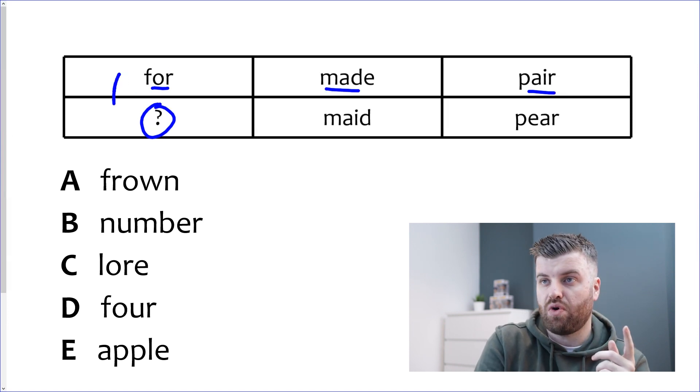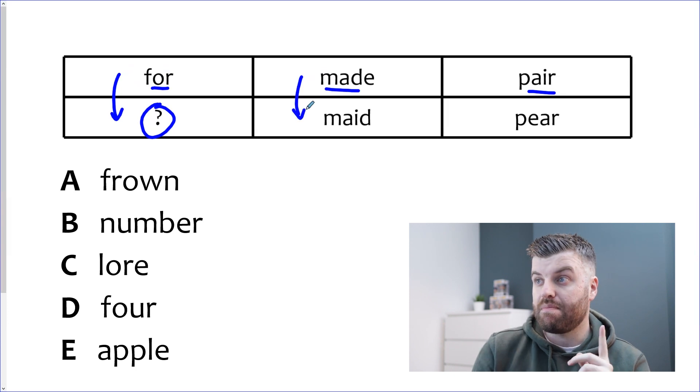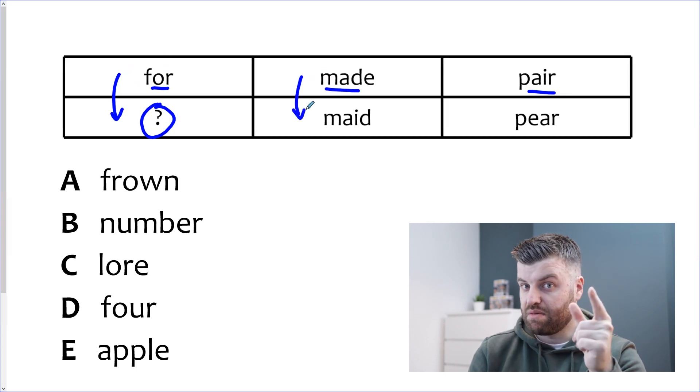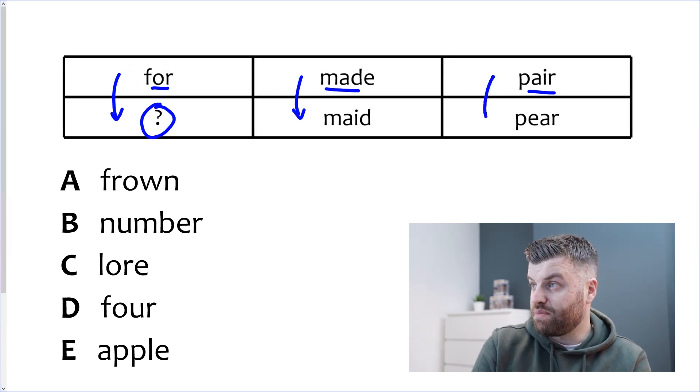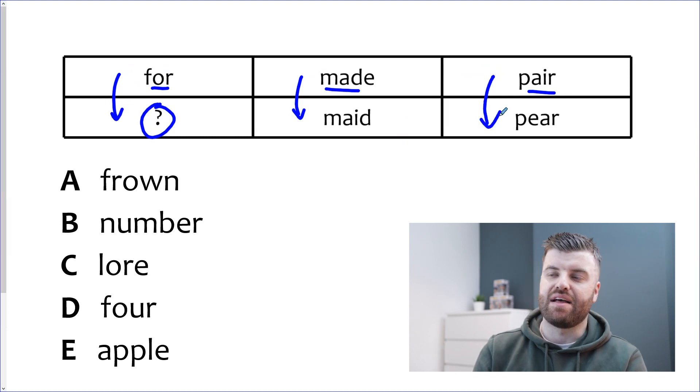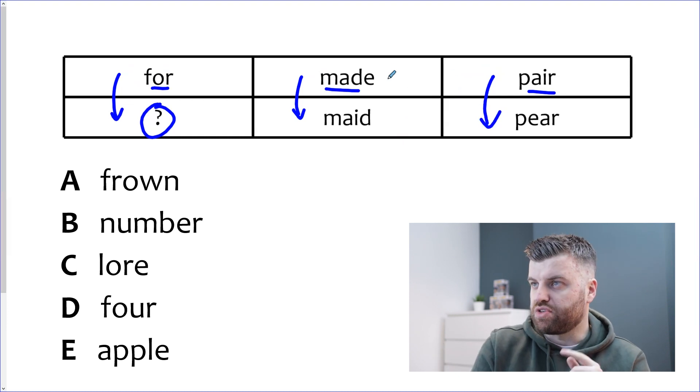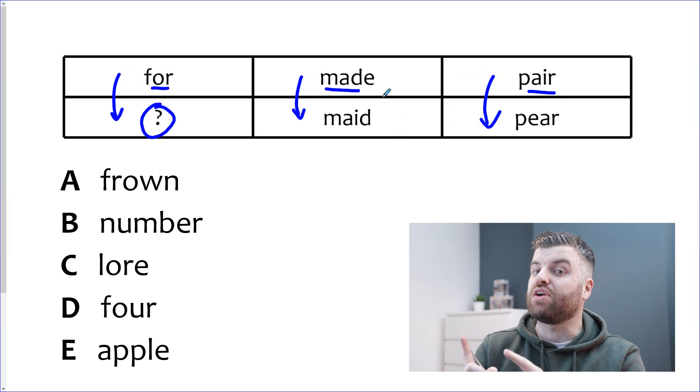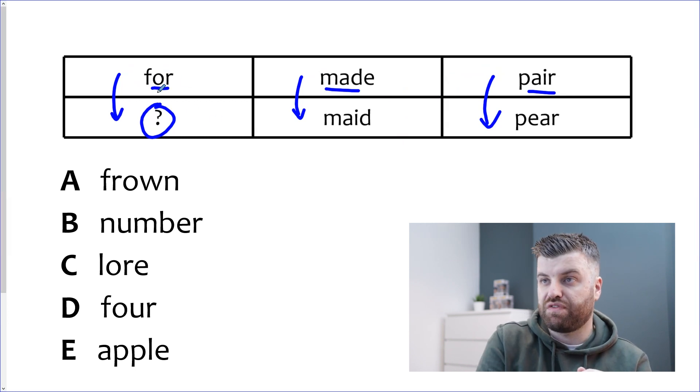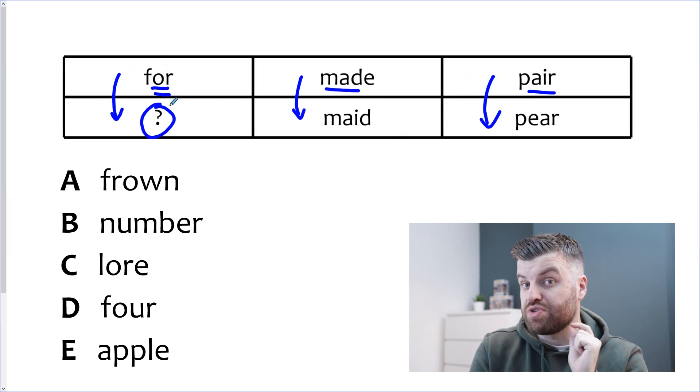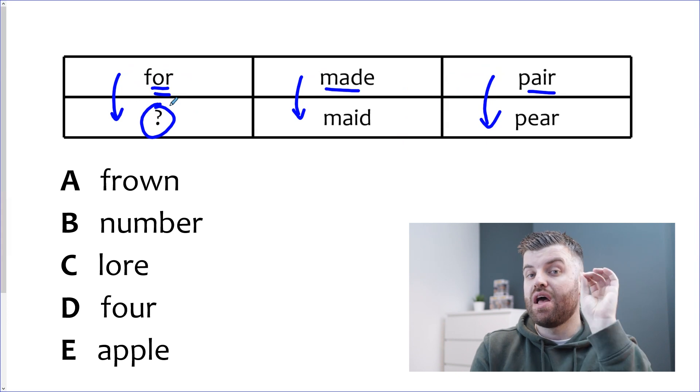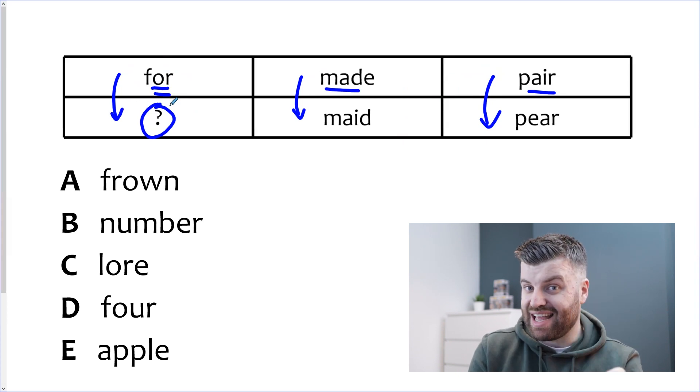I'm going to now go to the column method. So let's go down in columns. We have for and the missing word. We have made and maid. Now straight away my brain's clicked and I know they're homophones. So I'm going to keep that in my mind, homophones. And we're going to go to the last column and we have pair and pear. These are homophones going down in rows. So now we can go back to our first column which is for and we're going to look at the options below to see if we can find a homophone, a word which sounds the same as for. Let's take a look.